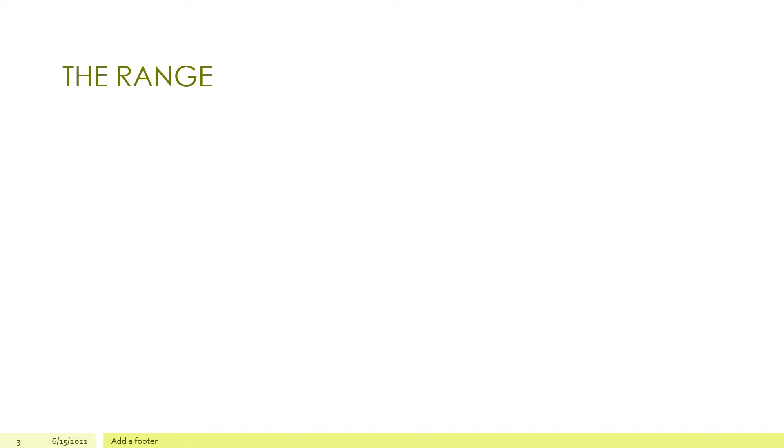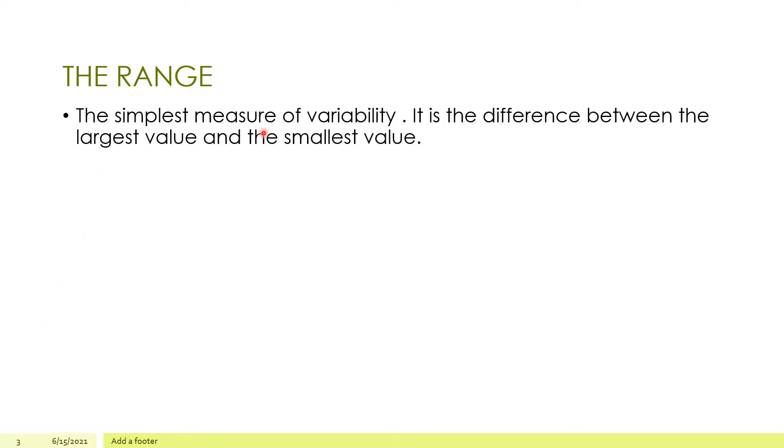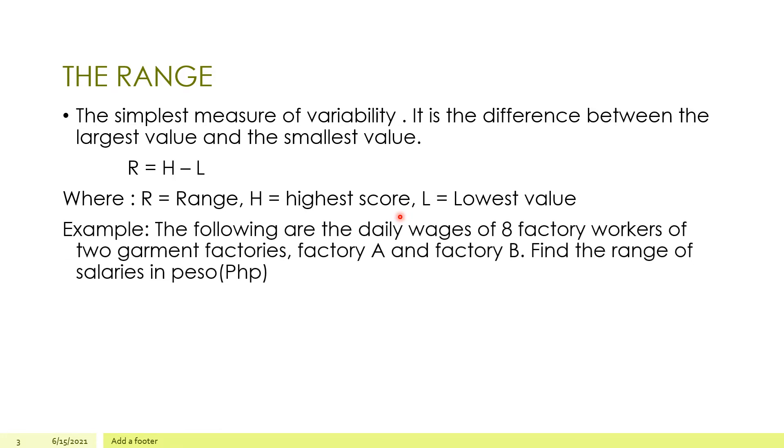What is the range? The range is the simplest measure of variability. It is the difference between the largest value and the smallest value. And the formula is R equals H minus L, where R equals the range, H is equal to highest score, and L is equals to the lowest score or lowest value.